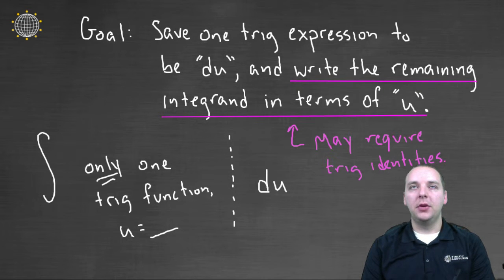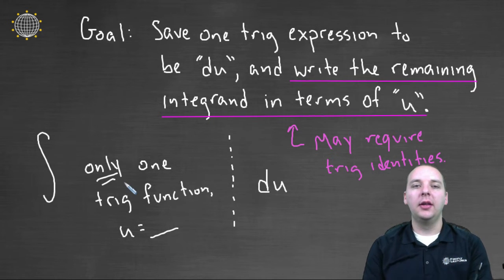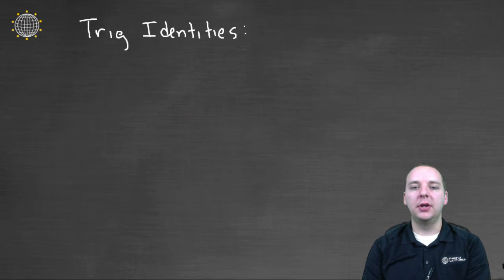For instance, if you had a cosine squared in the front, but the cosine was supposed to be your du, you could convert the cosine squared into one minus sine squared by using a trig identity. So you might have to do that, and we'll do plenty of examples where we do that. So just keep in mind we'll need to know our basic trig identities.